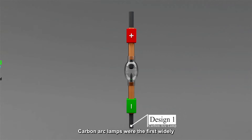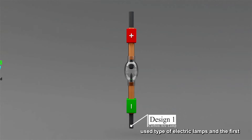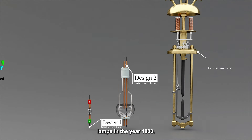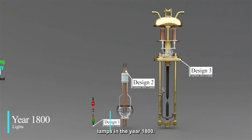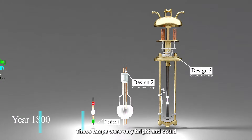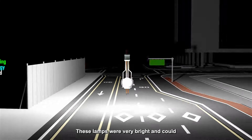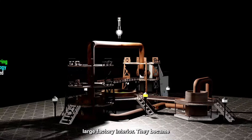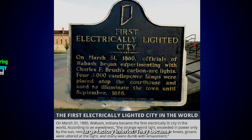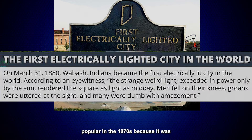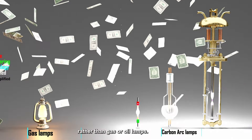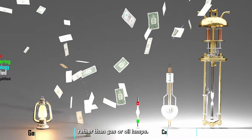Carbon arc lamps were the first widely used type of electric lamps and the first form of commercially successful electric lamps, in the year 1800. These lamps were very bright and could light a large length of the street and a large factory interior. They became popular in the 1870s because it was cheaper to light streets with arc lamps rather than gas or oil lamps.